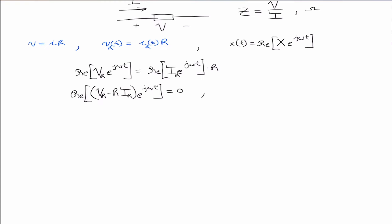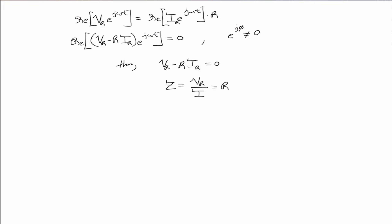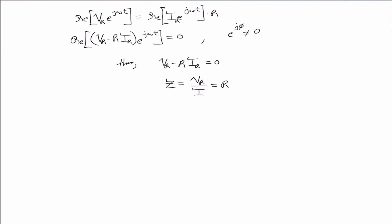The complex exponential e^(jφ) cannot equal zero. Thus the phasor voltage across the resistor minus the resistance times the phasor current through the resistor equals zero. Therefore we can write the impedance as the phasor voltage across the resistor divided by the phasor current through the resistor, which equals R. The impedance of a resistor is entirely real, and the VI relationship is the same in the time and phasor domain.